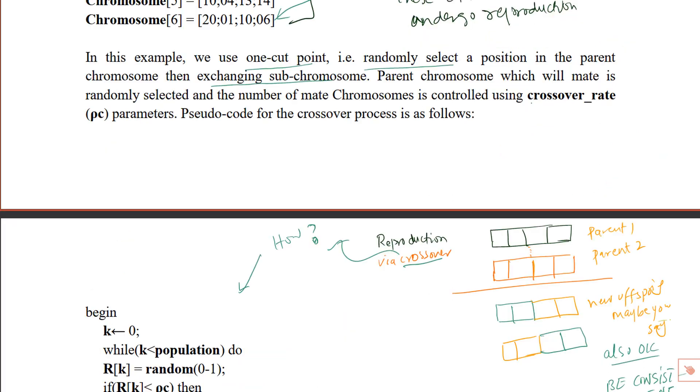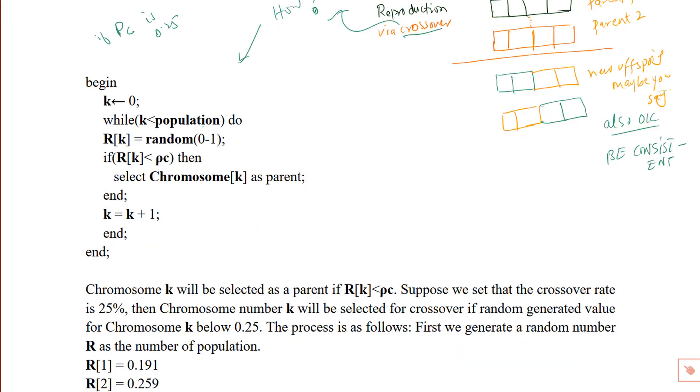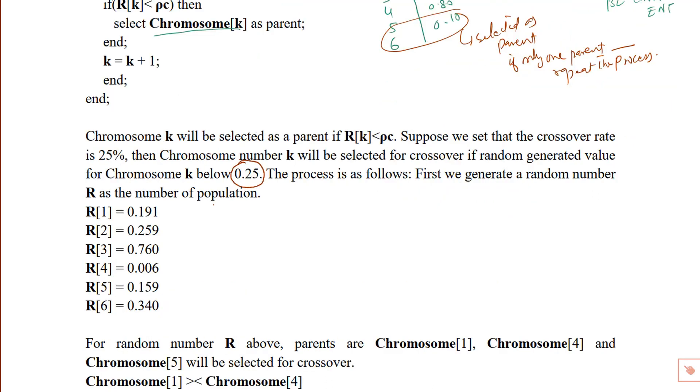Okay, let us formally see the reproduction process and the crossover rate first. The first thing is the crossover rate, which is denoted by rho c. If it is 0.25, then we need to randomly toss the coin six times - six because we have six chromosomes - and if the random tosses are like these, then we compare each number with 0.25. If any number is less than rho c, such as for chromosome 1 and chromosome 6, then these are selected as parents. If only one parent is selected, then repeat the process because we need at least two parents. Okay, let us go back to the draft. Here we assume that these six random numbers are generated and 1, 4 and 5 are selected as parents.